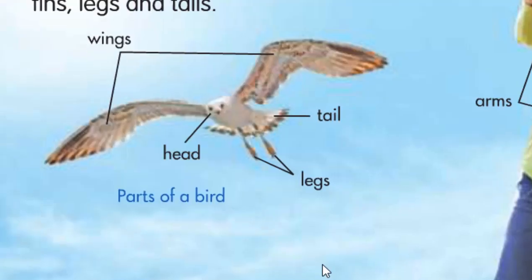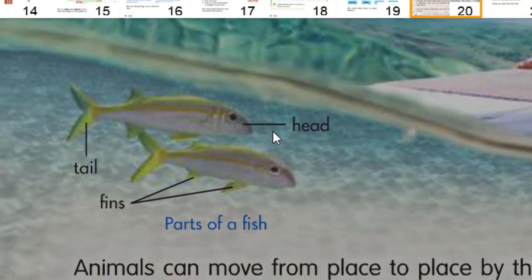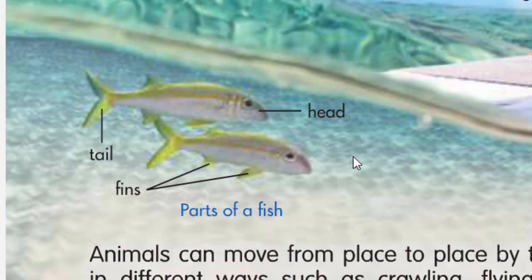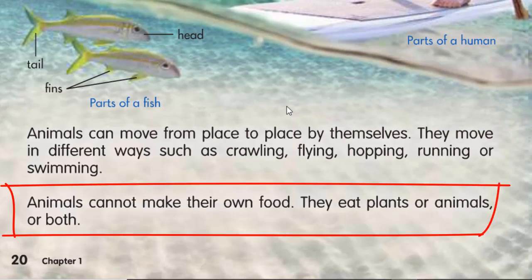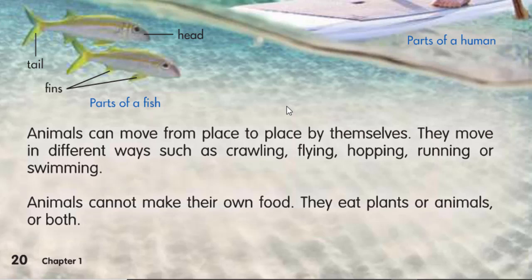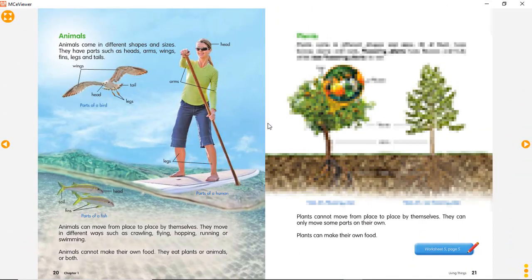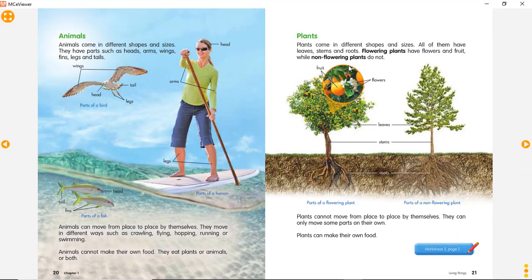Look at this. Let's talk about bird — bird is flying, burung ini sedang terbang. And fish is swimming. Jadi fish ini sedang berenang, berbeda dengan kita, mereka berenang. Animals cannot make their own food. Jadi animals itu tidak bisa membuat makanan sendiri, beda dengan plants yang bisa membuat makanannya sendiri.